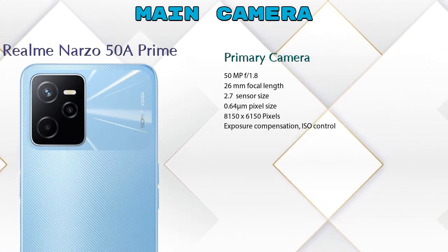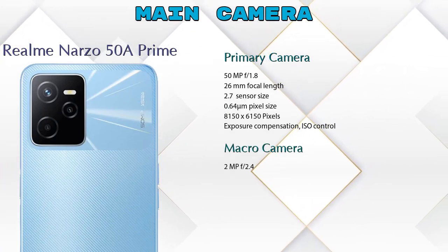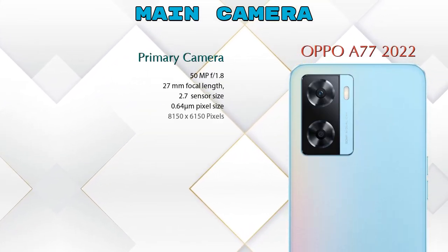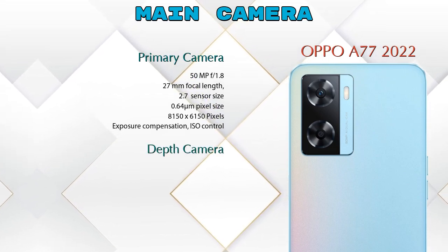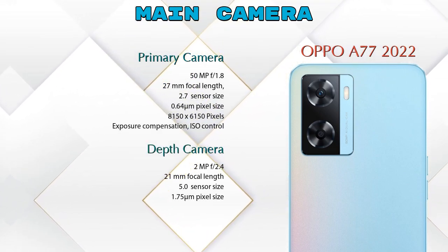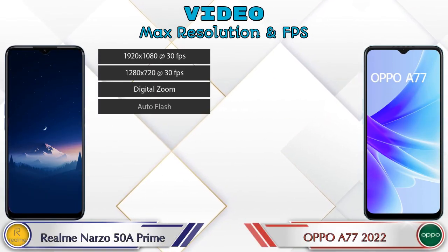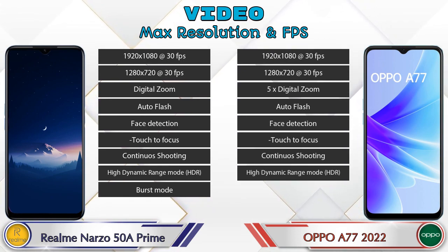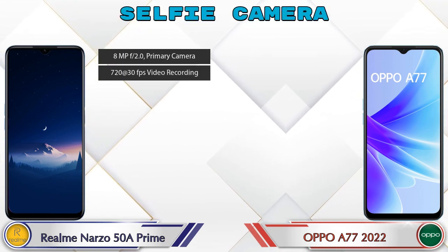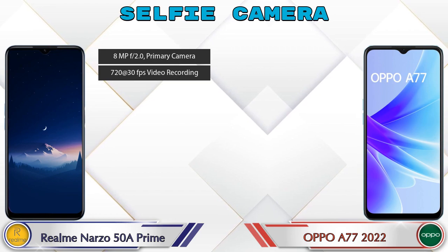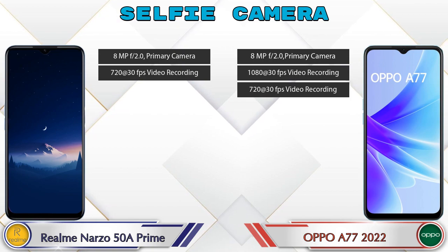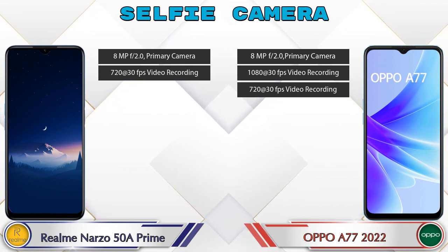Now let's see the detail about cameras. For the rear camera, the 50A Prime has three cameras: a primary camera, a macro camera, and a depth camera. The A77 2022 has two cameras: a primary camera and a depth camera. For video, the 50A Prime has 9 and the A77 2022 has 8 different types of features available. For the front selfie camera, the 50A Prime has a single camera with two features, and the A77 2022 also has a single camera with three features available.